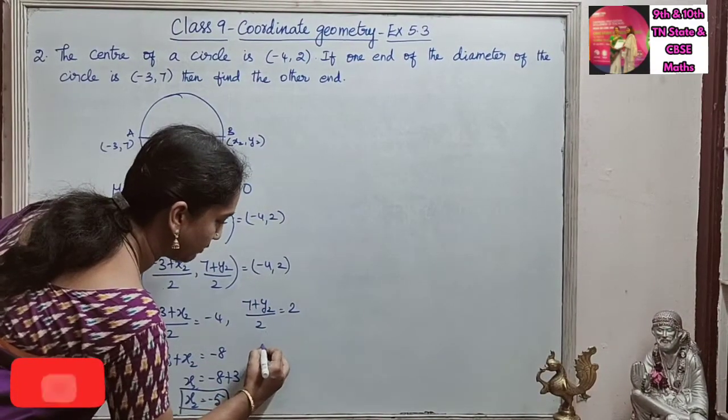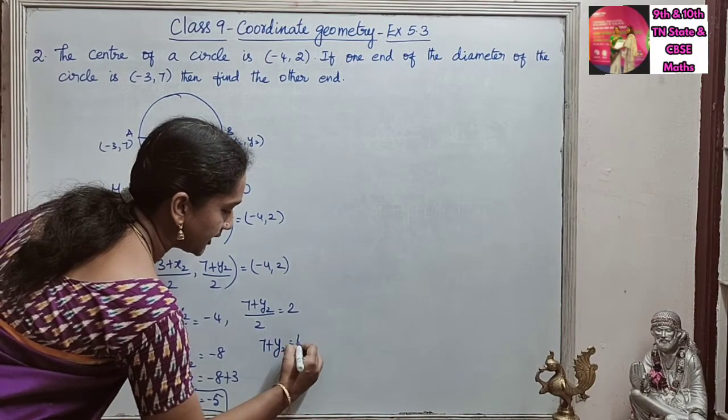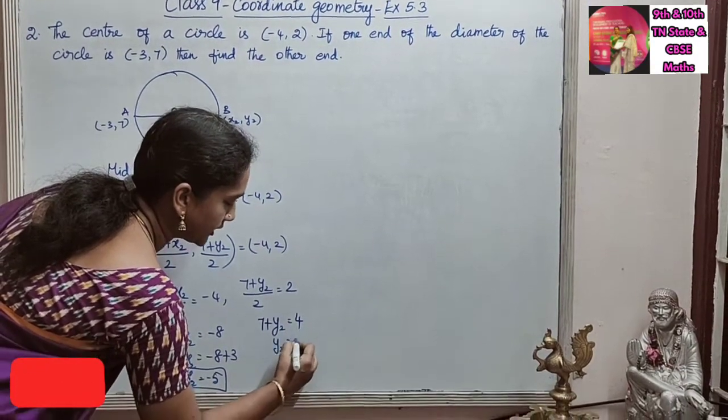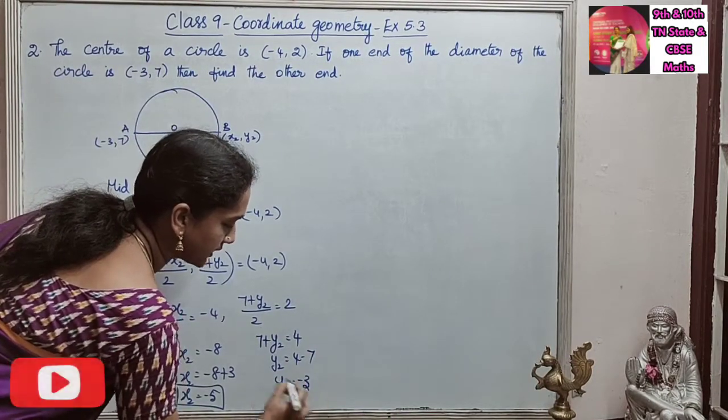Then Y2 is the same way. 7 plus Y2 is equal to 4. Y2 is equal to 4 minus 7. So Y2 is equal to -3.